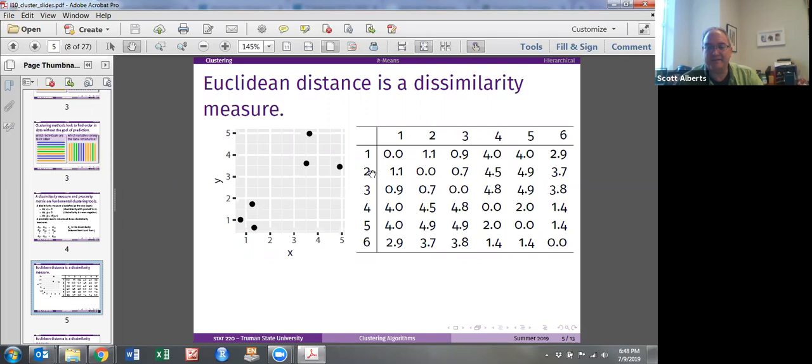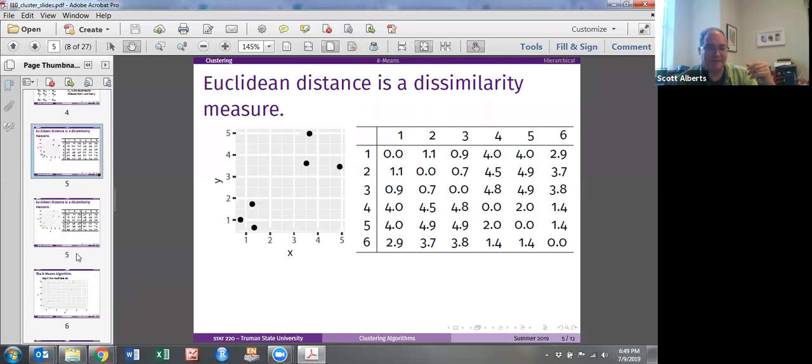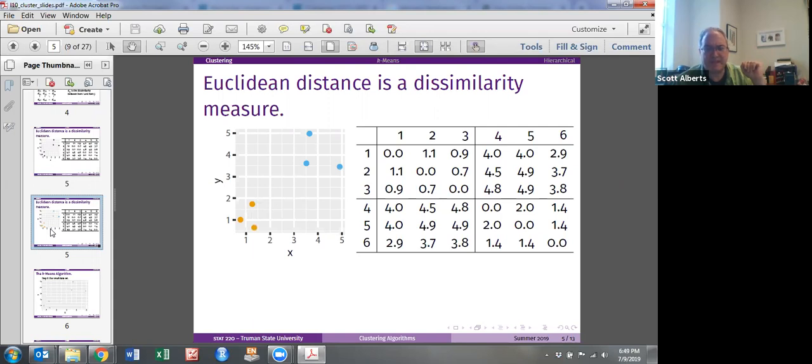Now this is a matrix and in this case, and in most cases, the distance from point 1 to point 2 is 1.1. That's the same as the distance from two to one. Each point is zero away from itself, right? If you think of these not just as distances, but of the idea of dissimilarity, one is exactly like one. And again, just with our eye, we can see that these two clusters sort of naturally fall together.